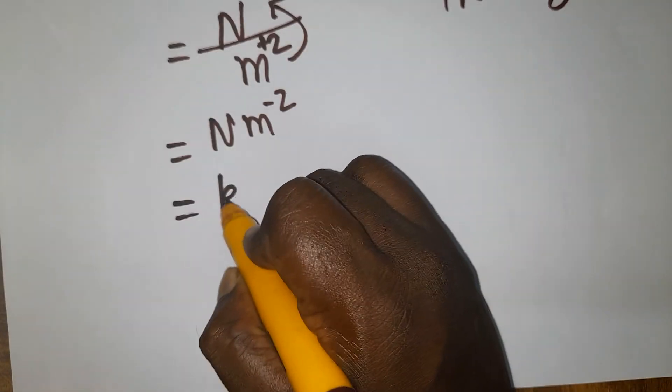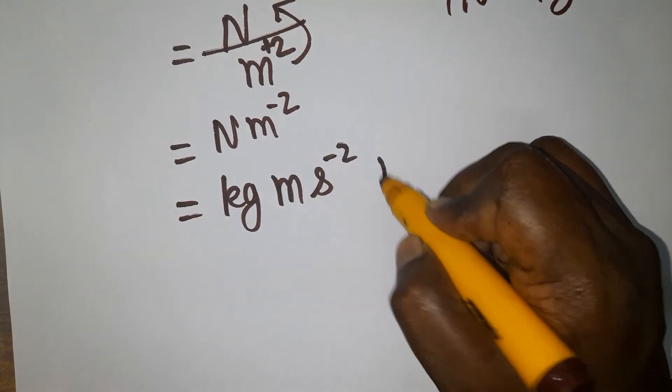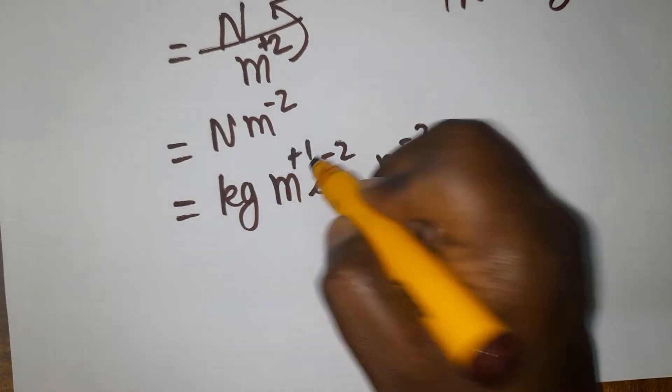Now instead of 1 Newton, kg meter second minus 2, times meter minus 2. This is plus 1, this is minus 2.